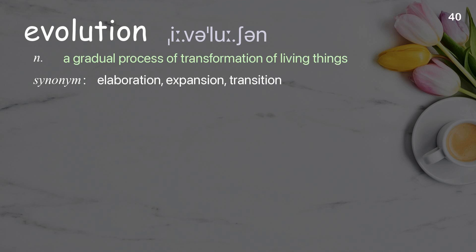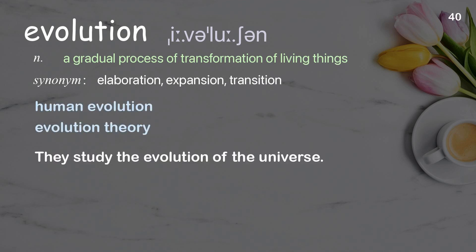Evolution: a gradual process of transformation of living things. Examples: human evolution, evolution theory. They study the evolution of the universe.